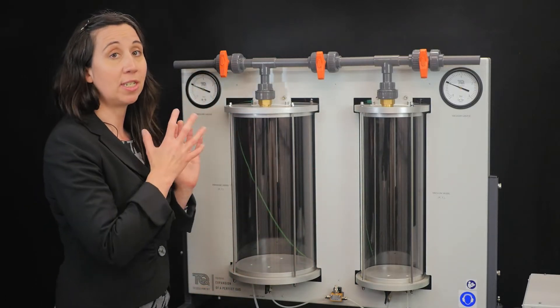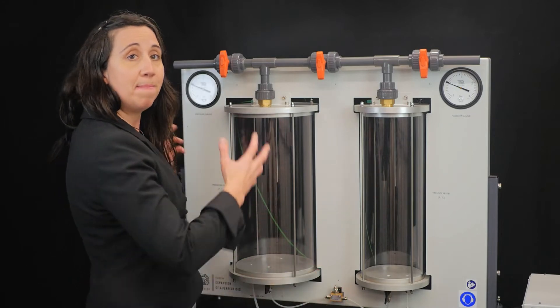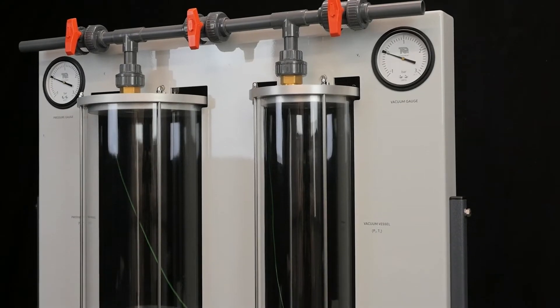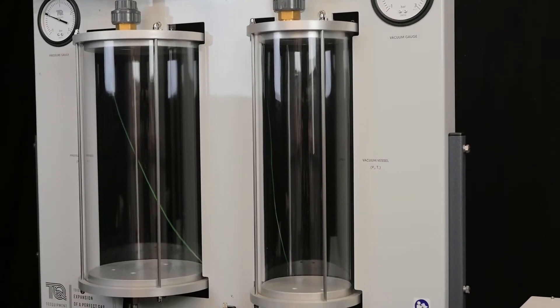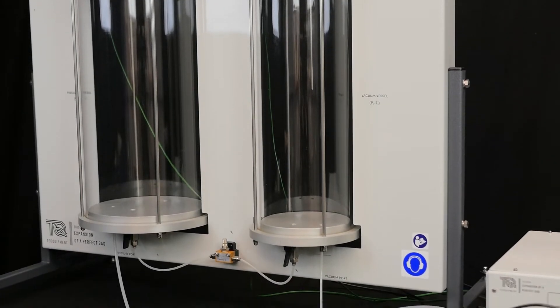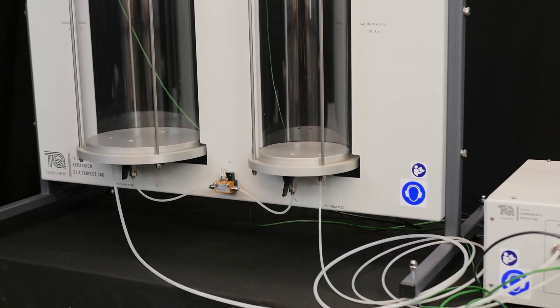Let's take a look around the experiment. The entire setup consists of two main elements: the main apparatus with the vessels and gauges and a separate control box that contains the pump and versatile data acquisition hardware.